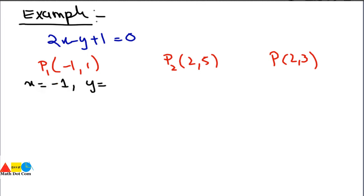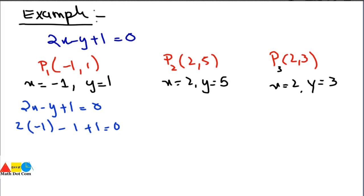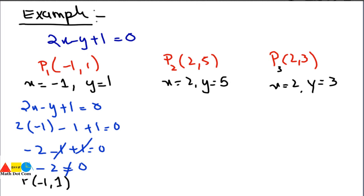For P1, x equals -1 and y equals 1. Putting these into 2x minus y plus 1 equals 0: 2 times (-1) minus 1 plus 1 equals 0, giving minus 2 minus 1 plus 1 equals 0, which simplifies to minus 2 equals 0. This is not equal to 0, so P1(-1, 1) does not lie on the line 2x minus y plus 1 equals 0.